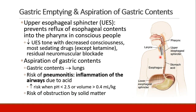There is also an upper esophageal sphincter. This prevents reflux of esophageal contents into the pharynx in conscious people. But as we decrease consciousness with sedating drugs, upper esophageal sphincter tone decreases. Residual neuromuscular blockade also decreases sphincter tone and increases the risk of regurgitation and potential aspiration.